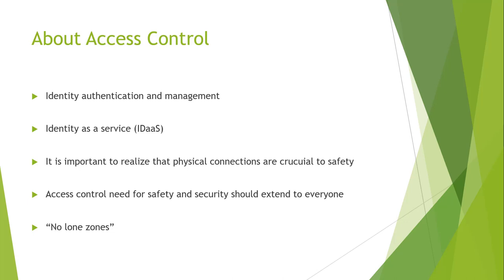This also ties back to no-lone zones. The book describes these as zones where individuals could be alone — there shouldn't be instances where workers are alone, especially with core infrastructure or any area requiring access control. That way it's not on a single individual, because they don't have direct access. If everything requires at least two individuals, it adds to the concept of layered defense.